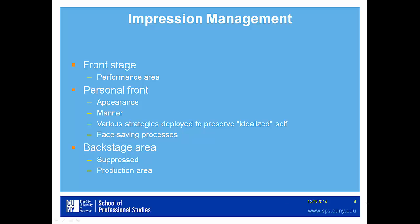For Goffman, in his work on impression management, there is always a front stage — our performance area — a personal front like our appearance, our manners, and various strategies deployed to preserve and project an idealized self. There are also a number of face-saving processes that allow us to make it easy for other individuals to project, confer, and preserve this idealized self. So when they slip, we typically go out of our way to help them restore the identity they seek to project and maintain, as it could be a social gaffe and embarrassment for all. There is also a backstage area, which is suppressed — the production area where we rehearse this idealized self and all the props for it.